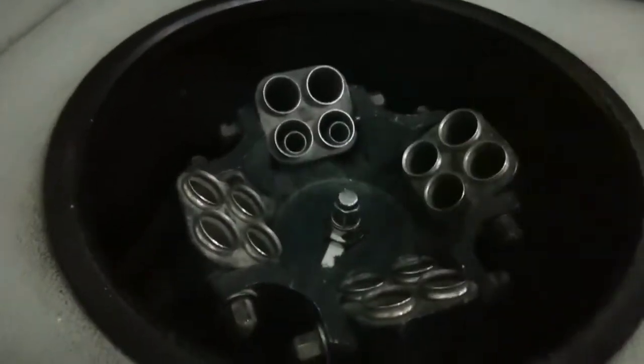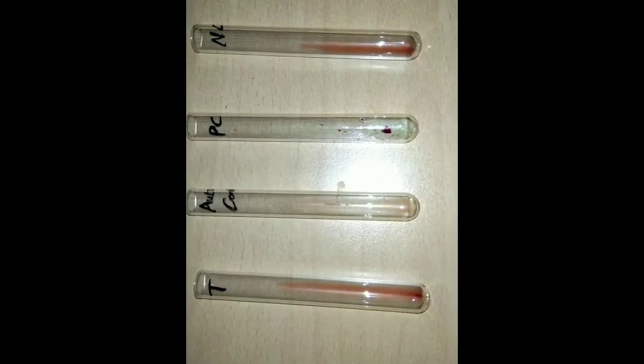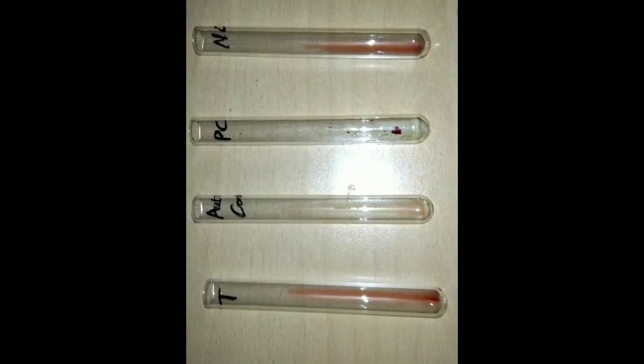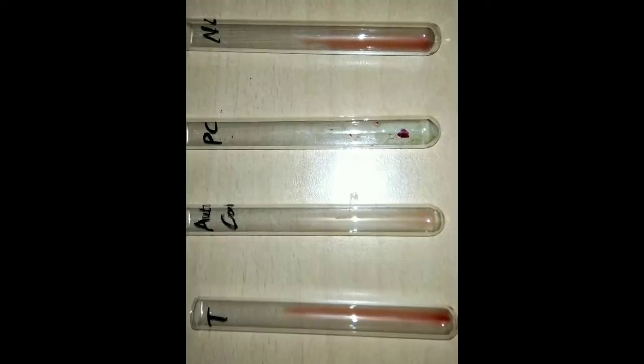Centrifuge the tubes at 1000 RPM for one minute. After centrifugation, look for agglutination. There is no agglutination seen in the test tube, auto control tube, and negative control tube. There is agglutination seen in the positive control tube.